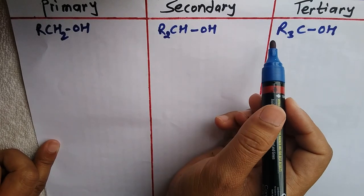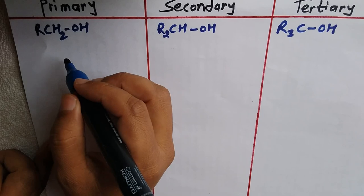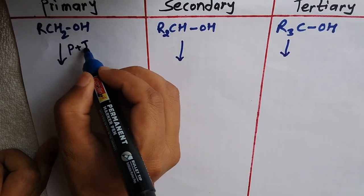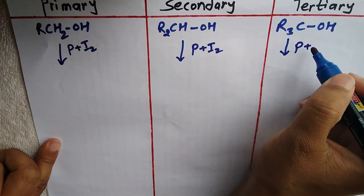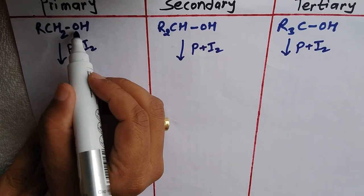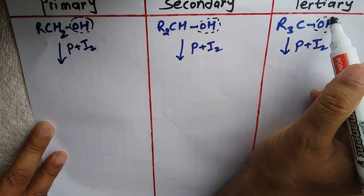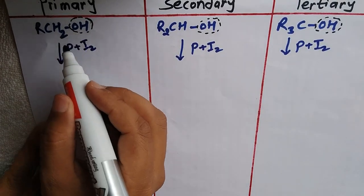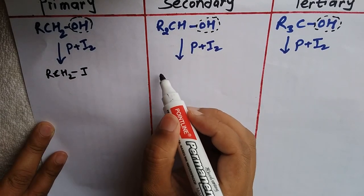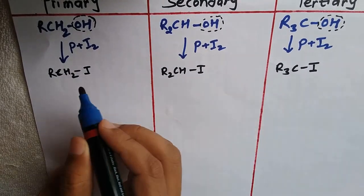In the first step of the Victor Meyer method, the given alcohol is converted into its alkyl iodide by treating it with phosphorus and iodine (P + I₂). The OH group is replaced by iodine. So RCH₂OH gives RCH₂I, R₂CHOH gives R₂CHI, and R₃COH gives R₃CI. These are all alkyl iodides.